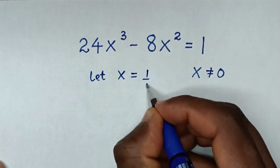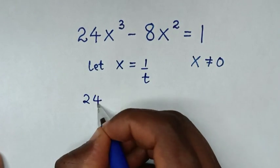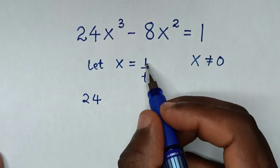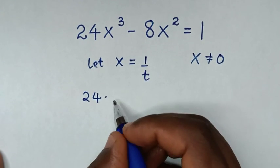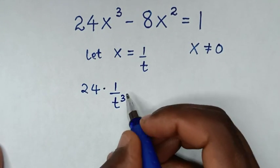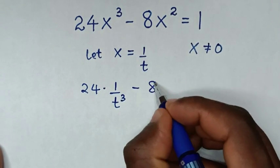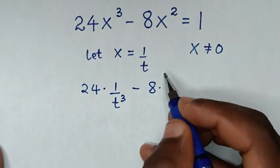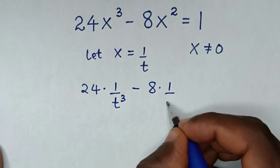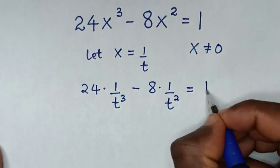From here we first let x equal to 1 over t. So it will be 24 times x³, we substitute 1 over t, so it will be 1 over t³. Then minus 8x², we substitute to get 1 over t², then is equal to 1.